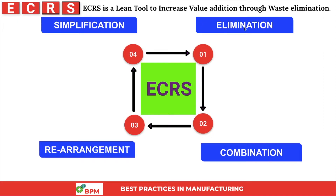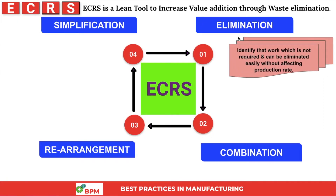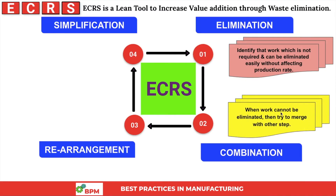First, let's talk about Elimination. We try to identify work that is not required and can be eliminated easily without affecting the production rate. In our process flow, we check that there is no step or activity which is not adding value and is not required — if so, we eliminate it.